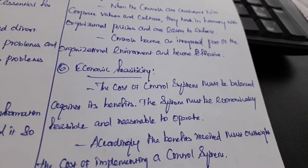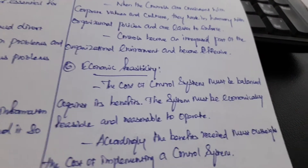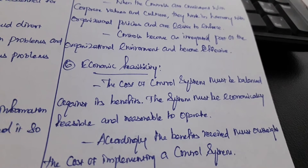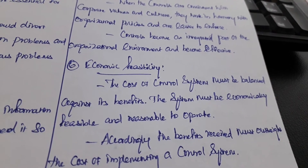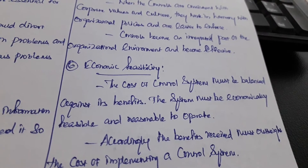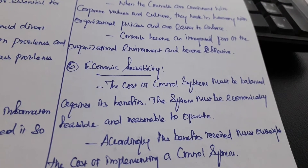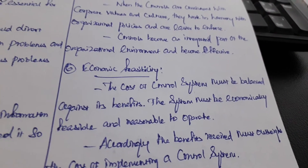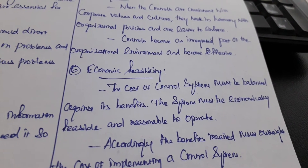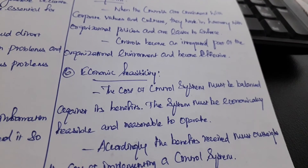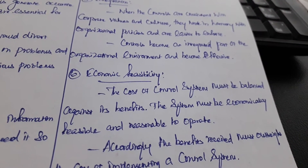Economic feasibility: the cost of a control system must be balanced against its benefits. The system must be economically feasible and reasonable to operate. The cost of control is an important consideration in management. If it is not cost-effective, we will see unnecessary costs incurred.